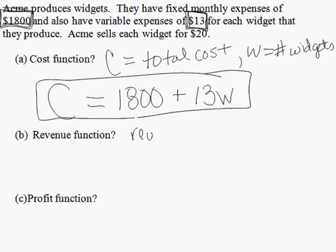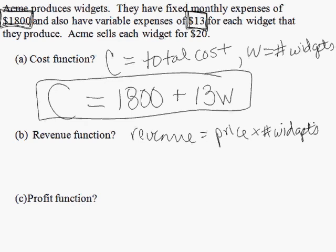Revenue is defined as price times the number of widgets sold. So price times number of widgets. In part A, we define W as the number of widgets. So our revenue will be price times W.